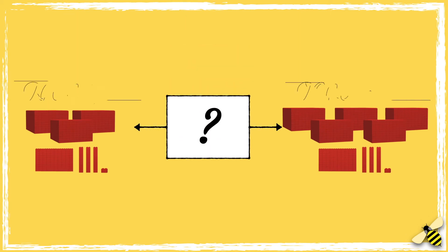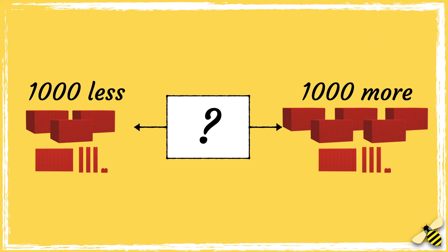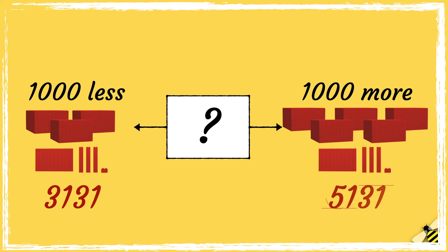Here are two different amounts. What number should be in the middle? Pause the video to give you time to work out the answer, then press play when you're done. The first amount shows three thousand one hundred and thirty one, the second amount shows five thousand one hundred and thirty one, therefore the middle number must be four thousand one hundred and thirty one.